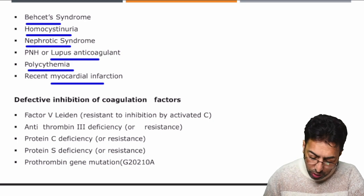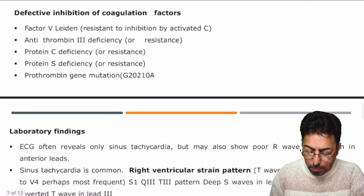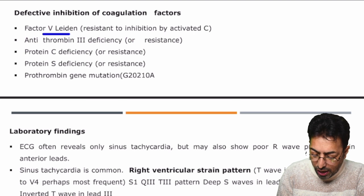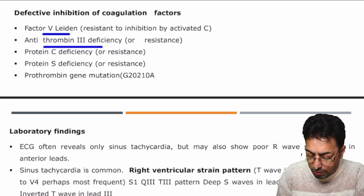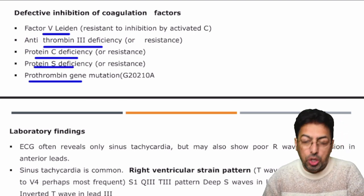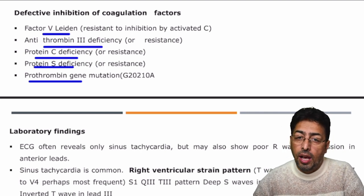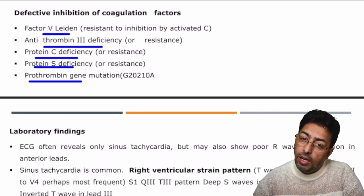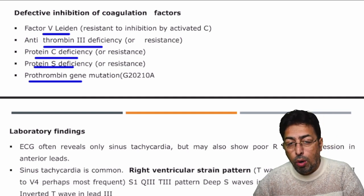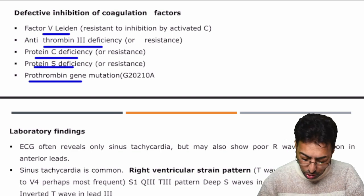Regarding defective inhibition of coagulant factors, you have to remember Factor V Leiden mutation, antithrombin 3 deficiency, protein C, protein S, and prothrombin gene mutations — these are all studied in hematology as procoagulant states, and they apply not only to pulmonary thromboembolism but to general thrombosis as well.